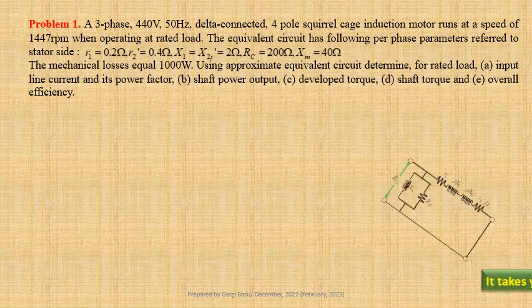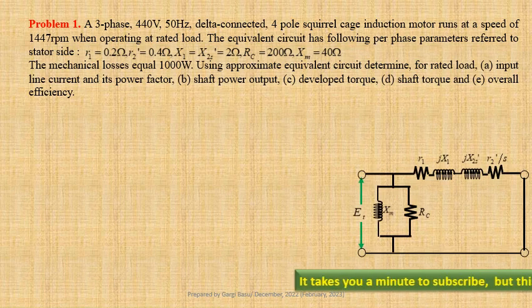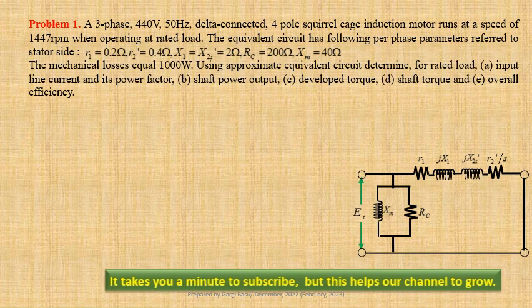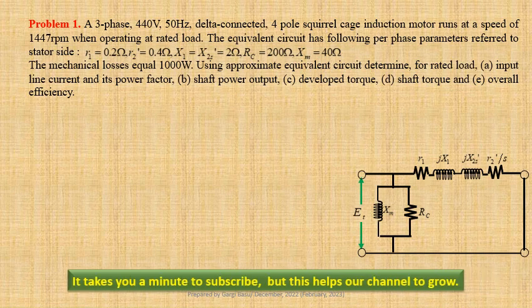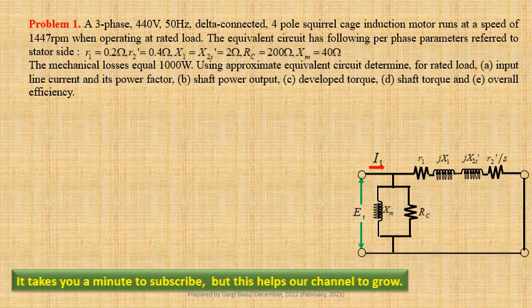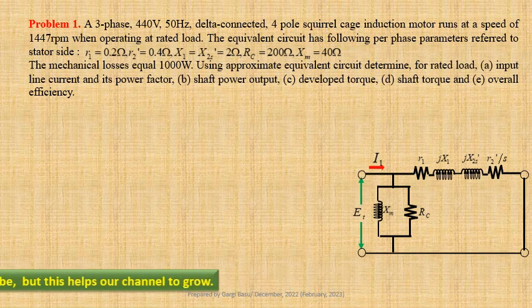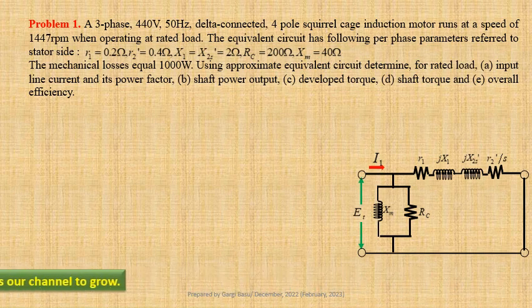Using the approximate equivalent circuit, we have to determine for rated load: input line current and its power factor, shaft power output, developed torque, shaft torque, and overall efficiency. Let us first write down the given data.